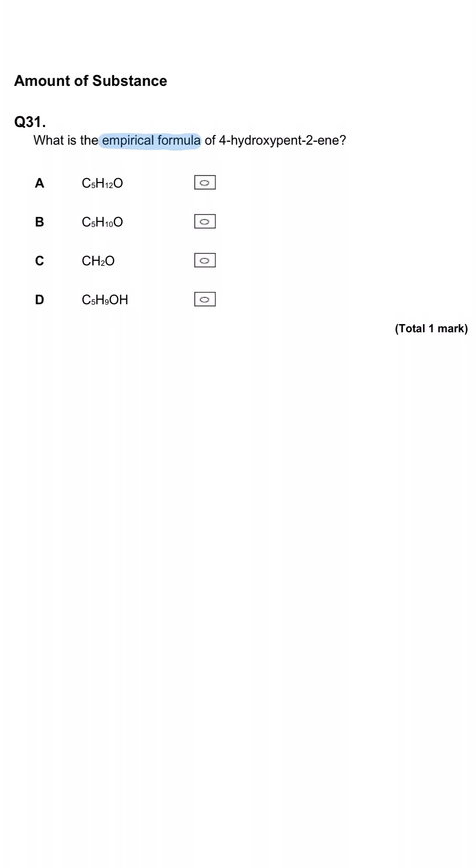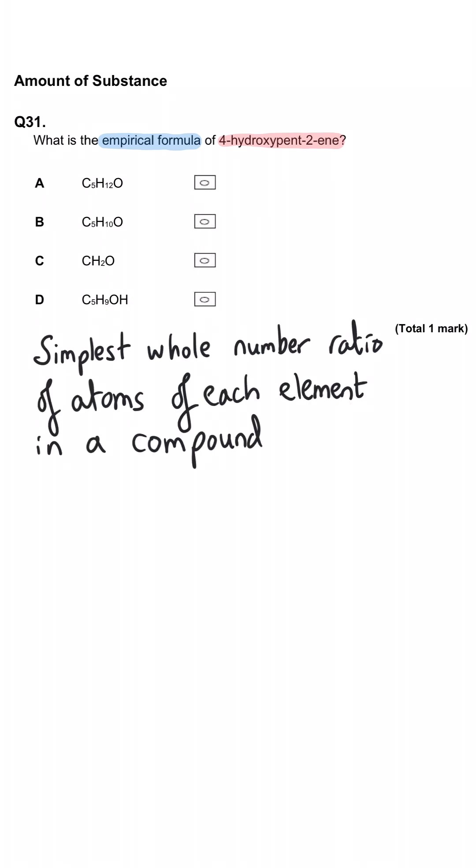What is the empirical formula of 4-hydroxypent-2-ene? Well, the empirical formula is the smallest whole number ratio of atoms of each element in a compound. So before we can work out what the empirical formula is, we need to know what the compound actually looks like or at least what its molecular formula is. Since we haven't been given any indication, we need to draw it.